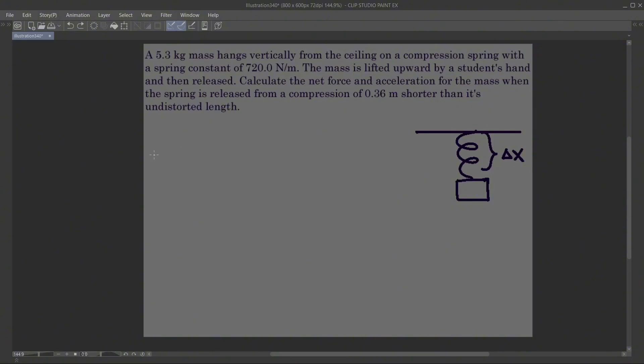First we need to take note of our givens. The mass of the object on the spring is 5.3 kg. Spring constant is 720 N per meter. And delta x is 0.36 m shorter.